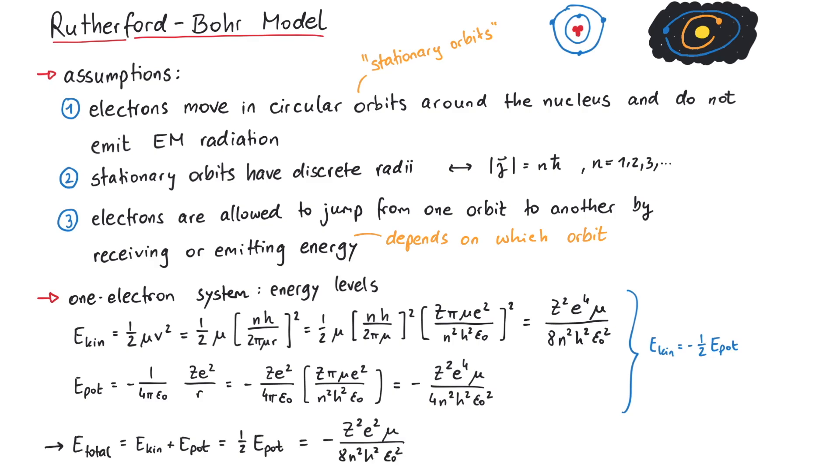There's again the parameters n and z, as well as some constants, which we call Ry star. This is called the Rydberg constant, named after the Swedish physicist Johannes Rydberg. For a hydrogen atom, Ry star is approximately equal to 13.6 eV.